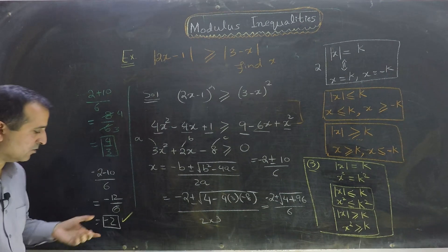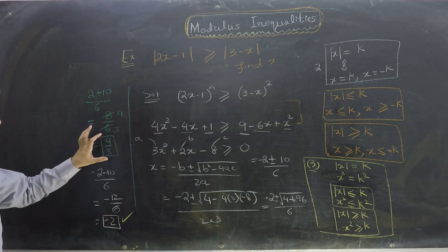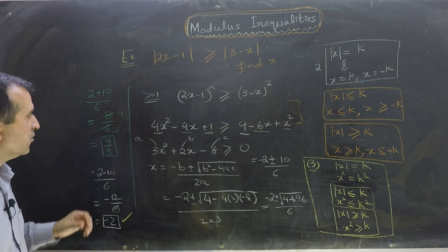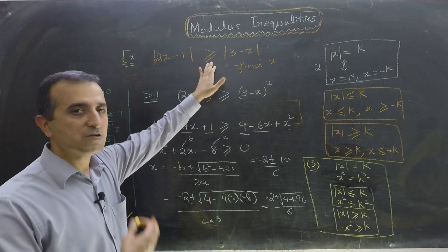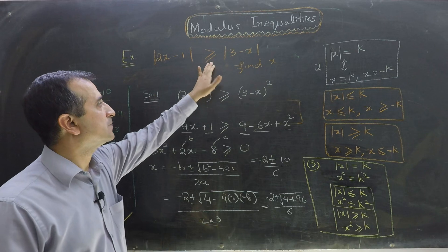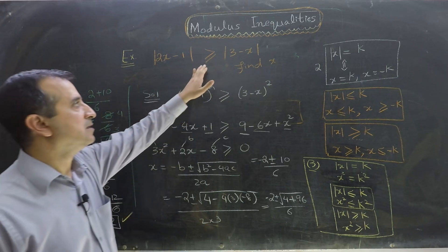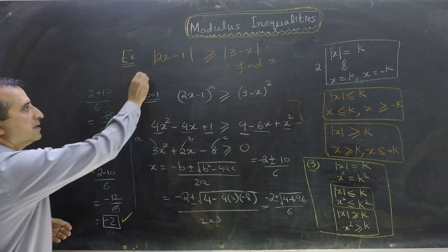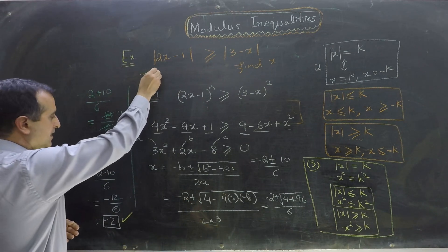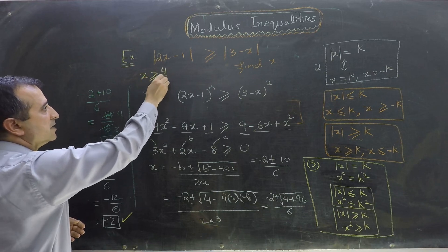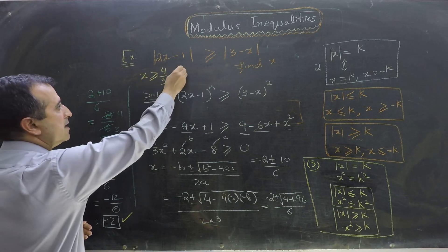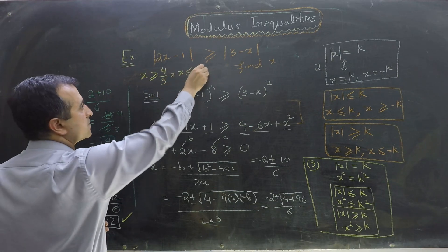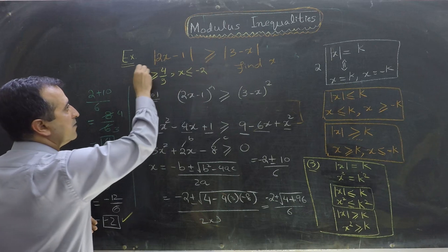So we have two values: minus 2 and 4 over 3. We need to write these in terms of inequalities. For the positive root we keep the original sign, greater than or equal to. For the negative root we switch the sign to less than or equal to. So the final result is: x is greater than or equal to 4 over 3, and x is less than or equal to minus 2.